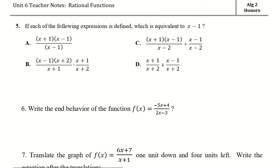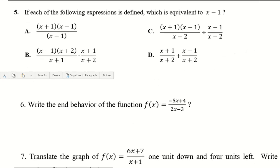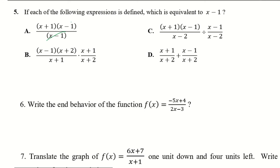For number 5, which expression is equivalent to x minus 1? For option a, we have x minus 1 on top and bottom canceling, leaving x plus 1 — not x minus 1, so it can't be a.